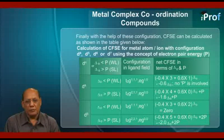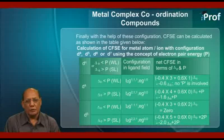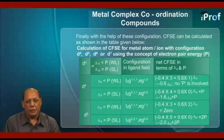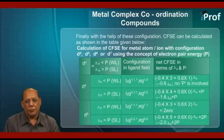For D4, considering the next aspect where delta O is more than P, that is for strong ligands, the configuration in the ligand field will be D2G211, EG00. And the CFSE will be equal to minus 1.6 delta O plus P.